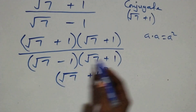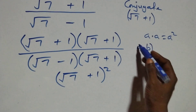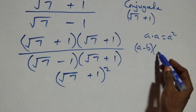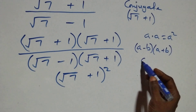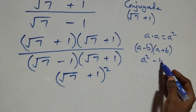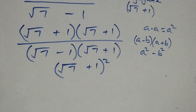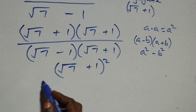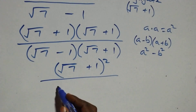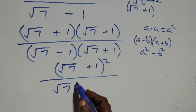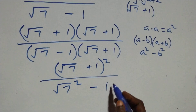The denominator follows the identity (a minus b)(a plus b) equals a squared minus b squared. Here a is root seven and b is one, so the denominator becomes root seven squared minus one squared.